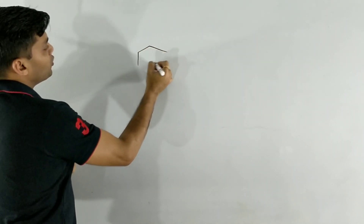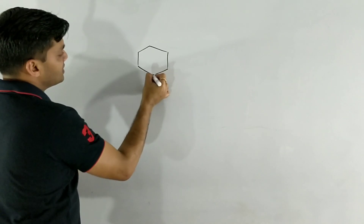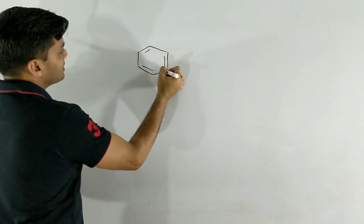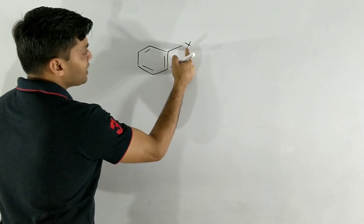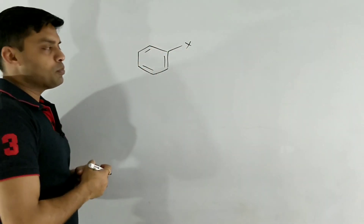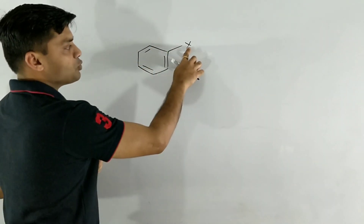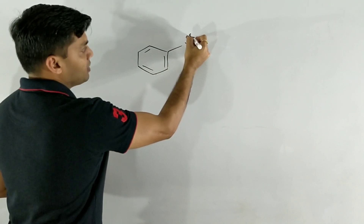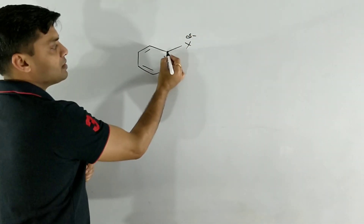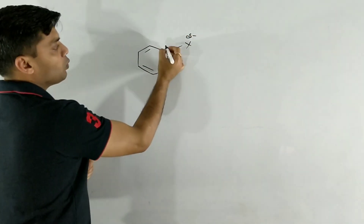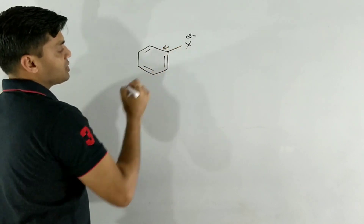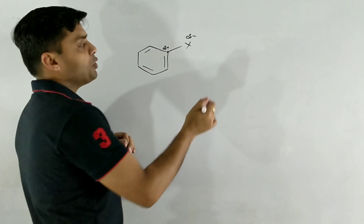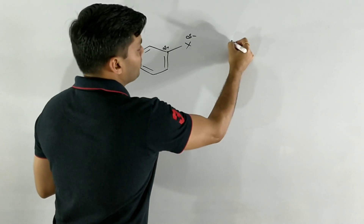Just like alkyl halides, even in aryl halides the C-X bond will be polar, because halogens are more electronegative than the carbon atom. So this halogen will contain a partial negative charge and this carbon will have a partial positive charge. This means the C-X bond in aryl halides is polar, and we know water is also a polar molecule.